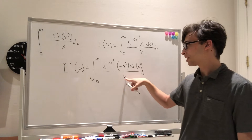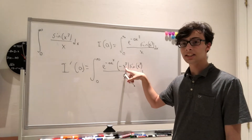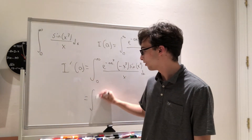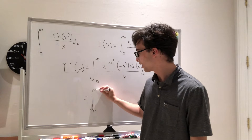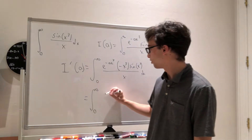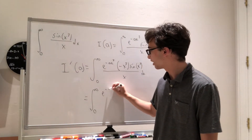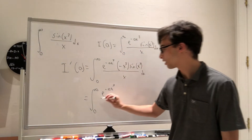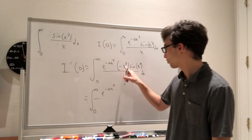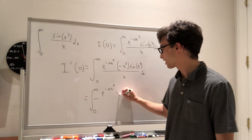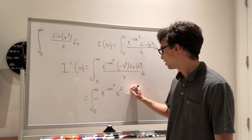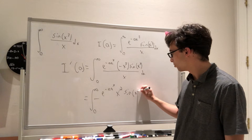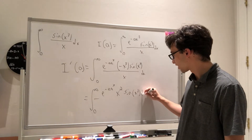Now as we see, this x will cancel. So I'm going to simplify this one more time. We have the integral from 0 to infinity of e to the negative a x cubed — this x cancels with one of those — bringing the negative sign to the front, we'll have negative x squared sine of x cubed dx.